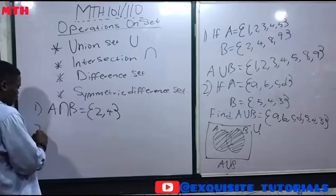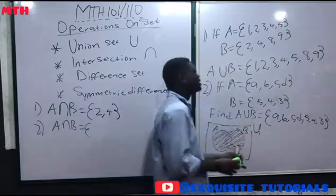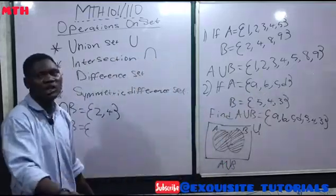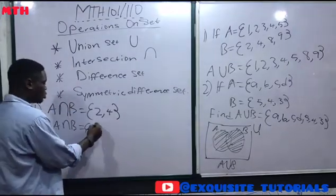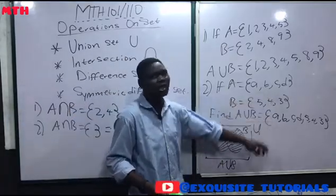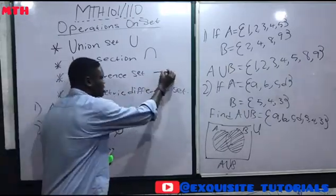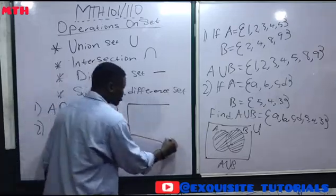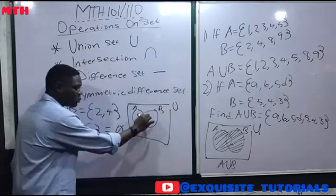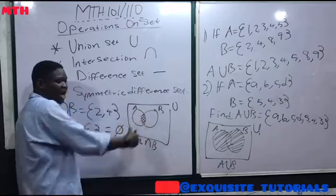For the second question, A = {a, b, c, d} and B = {5, 4, 3}. A ∩ B are elements common to both. There are no elements here that appear in both sets. Since there's no elements in common, A ∩ B becomes an empty set, represented as ∅ (phi). In a Venn diagram, A ∩ B is the overlapping middle part that the two circles share in common.